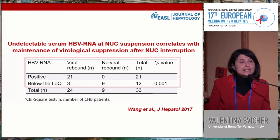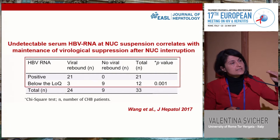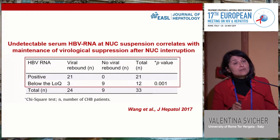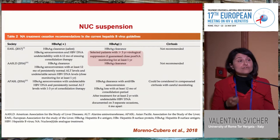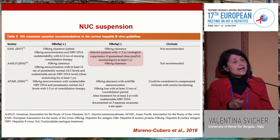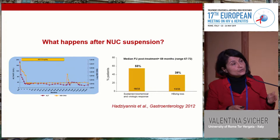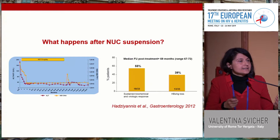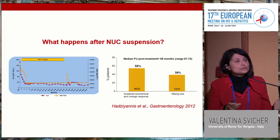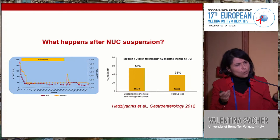In line with this, a study shows that undetectable serum HBV RNA at NUC suspension correlates with the lack of virological rebound after NUC withdrawal. We can now discuss the issue of NUC suspension in HBeAg-negative patients under prolonged virological suppression. A pioneering study showed that suspension of NUC treatment determines, as expected, an increase in serum HBV DNA, followed by achievement of HBeAg-negative infection state and HBsAg loss in a substantially high proportion of patients.